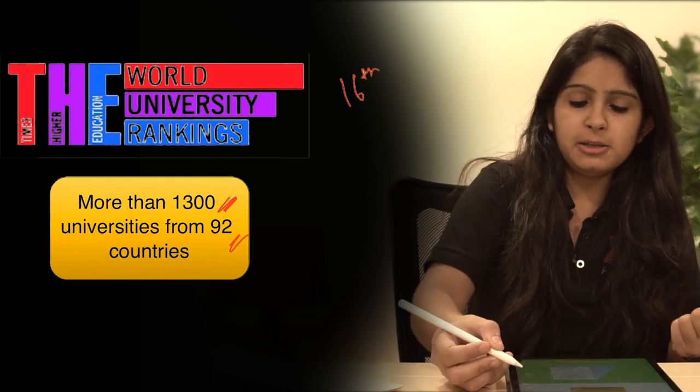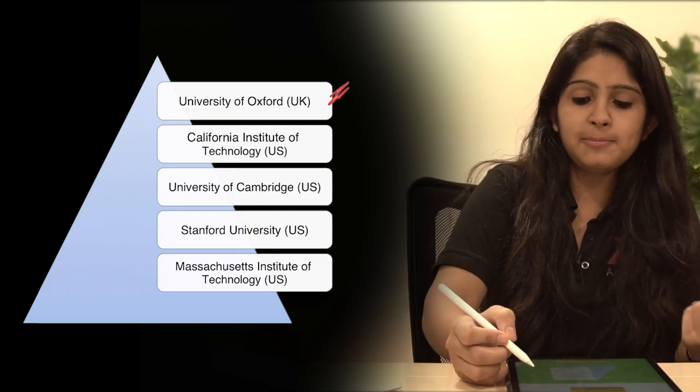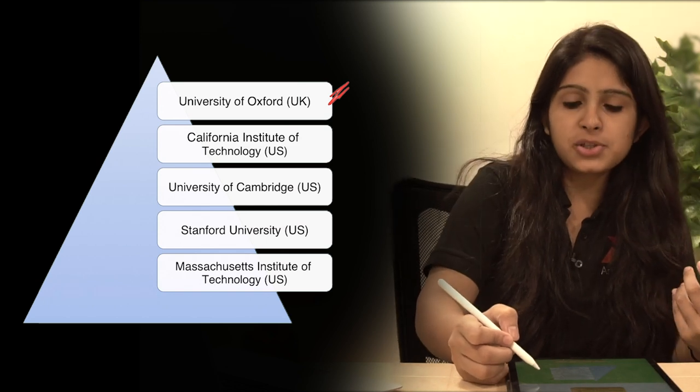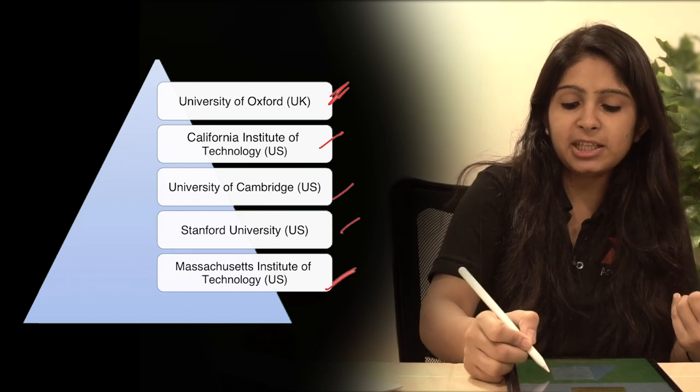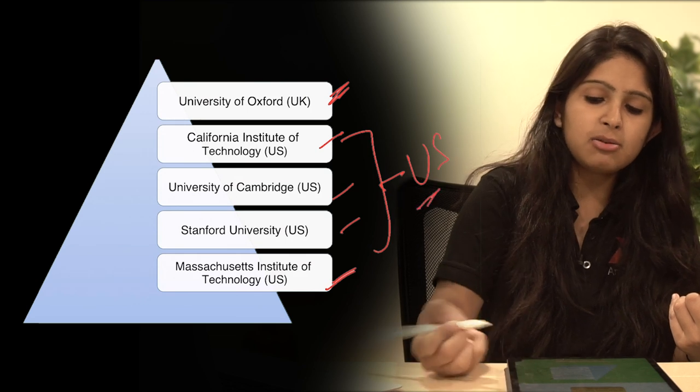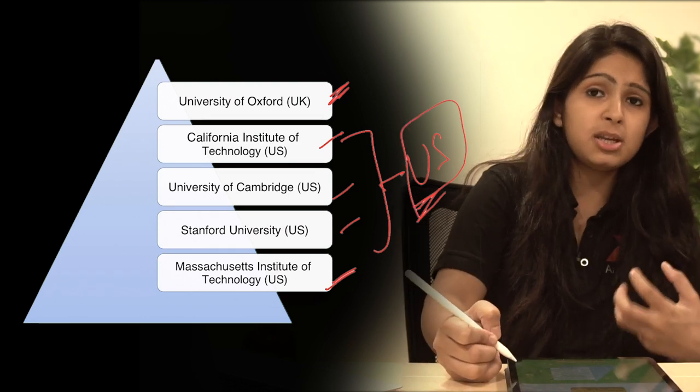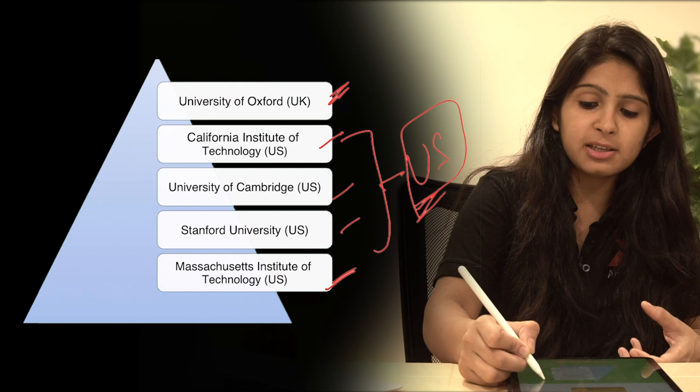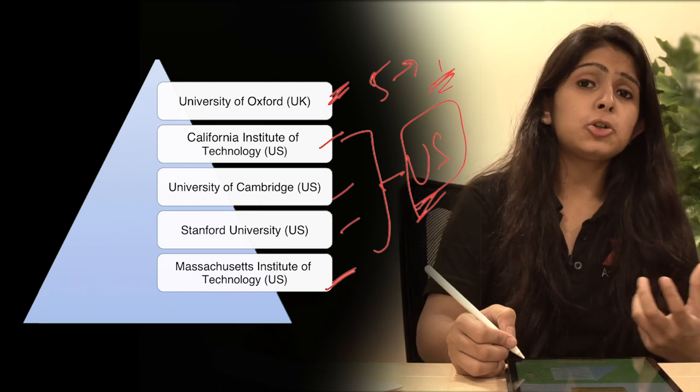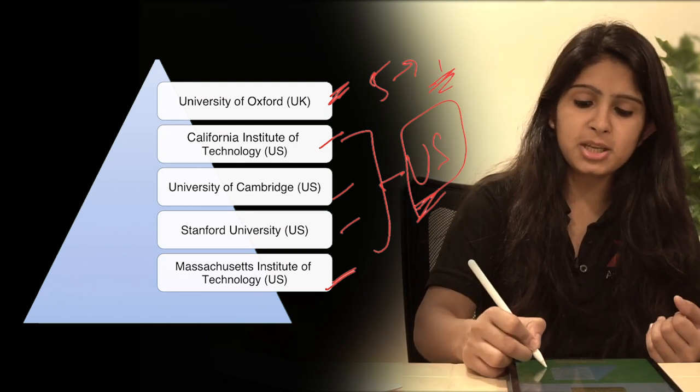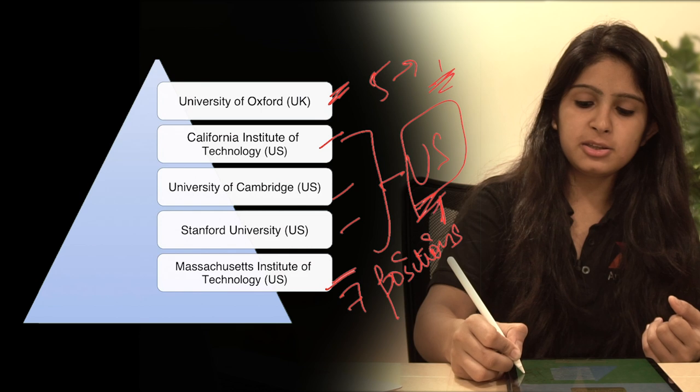If you look at this diagram, you can see the first position is being occupied by Oxford University from UK, and the other top positions are occupied by Caltech, Cambridge University, Stanford, and MIT, and all these belong to US. If we look at the list of top 10 universities, then also 7 positions are occupied by US.